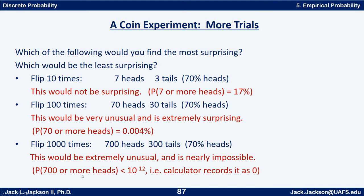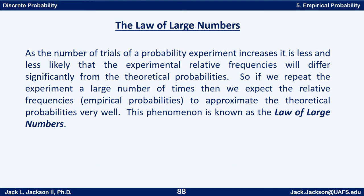The point is that with a large number of flips we'd expect something much closer to the 50 percent mark. The law of large numbers says that as the number of trials of a probability experiment increases, it is less and less likely that the experimental relative frequencies will differ significantly from the theoretical probabilities. So if we repeat the experiment a large number of times, we expect the empirical probabilities to approximate the theoretical probabilities very well. This phenomenon is known as the law of large numbers.